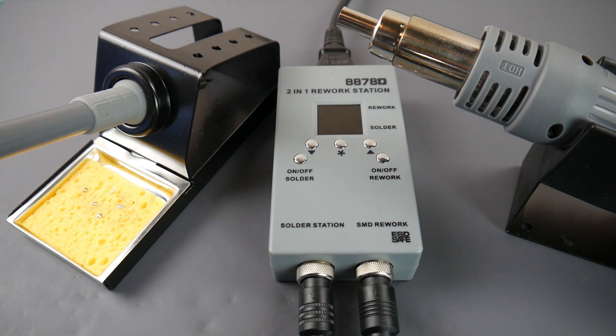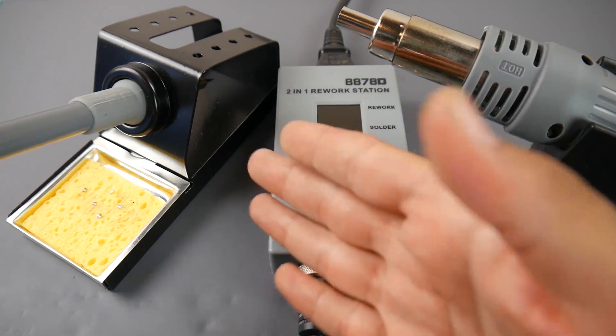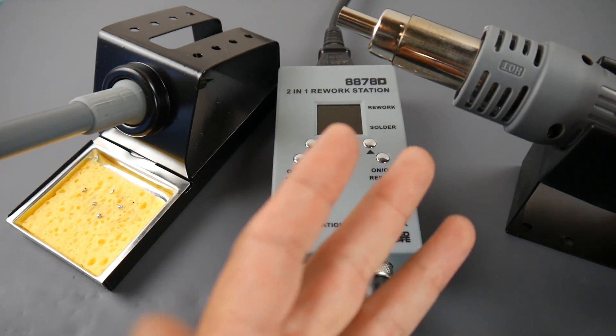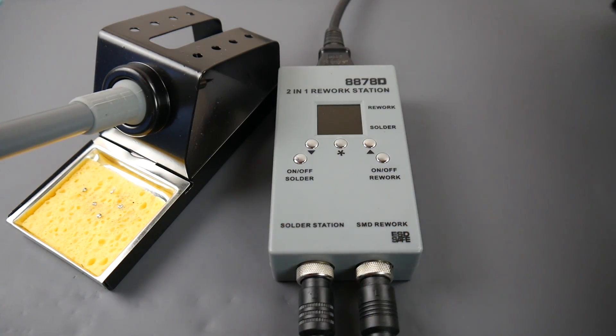Hey what is up guys, in today's video we're going to be taking a look at a rework station. It's called Yaogong, it's the 8878D 2-in-1 rework station. This provides you with everything you see here including the power cable, and it's a soldering iron and a rework station hot air gun.